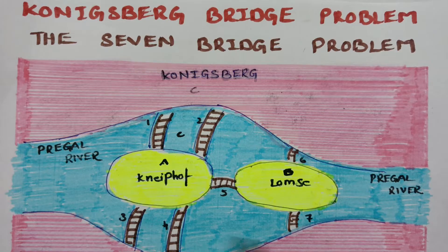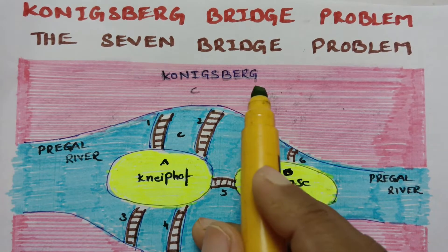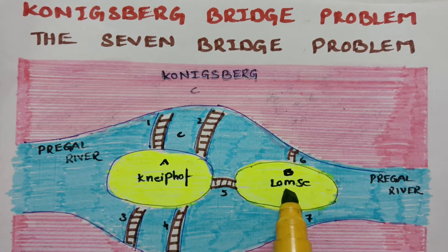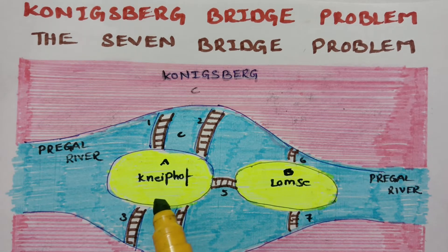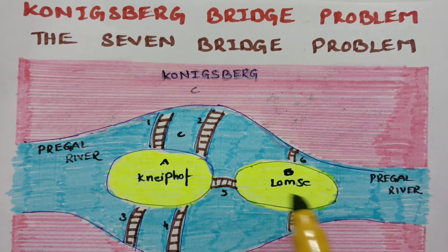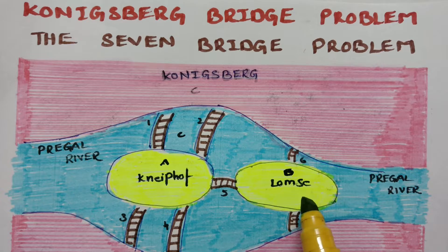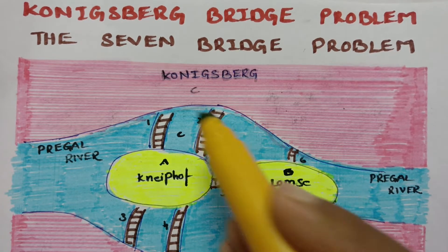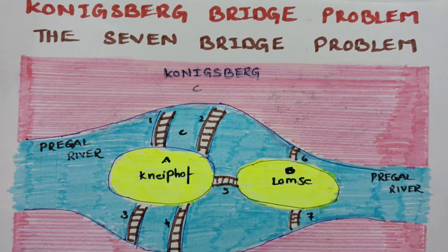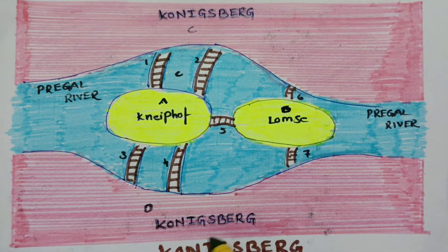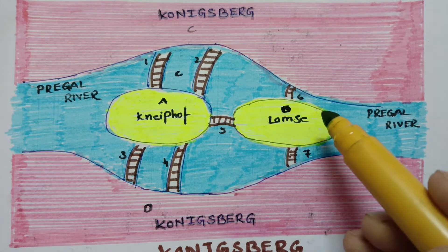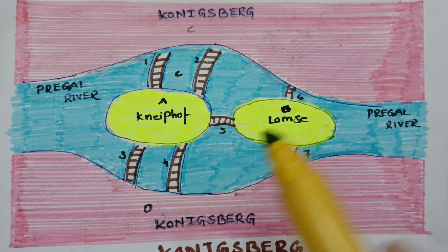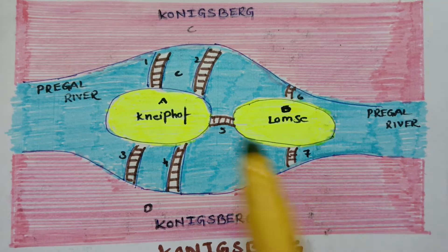In this town, the Pregel River flows through the center of Königsberg. At the center of the Pregel River there are two islands — A and B. The first island is Kneiphof and the second is Lomse. The two islands A and B and the two banks C and D are the land areas of the town Königsberg.